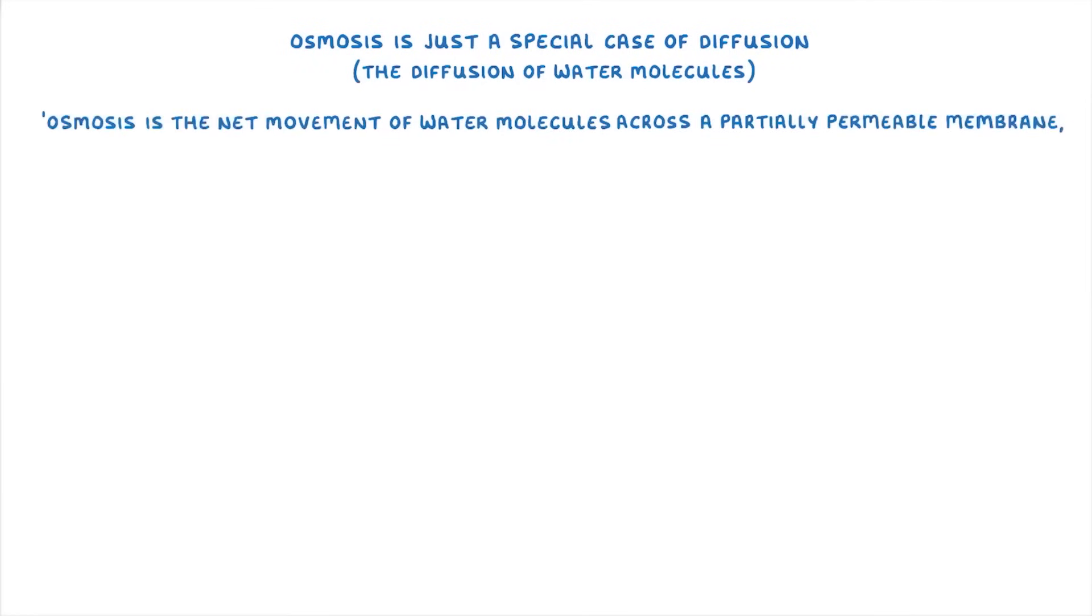Now, moving on to osmosis. Osmosis is really just a special case of diffusion, and is specifically the diffusion of water molecules. The definition you need to know is that osmosis is the net movement of water molecules across a partially permeable membrane from a region of higher water concentration to a region of lower water concentration.